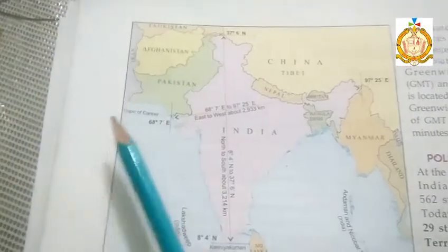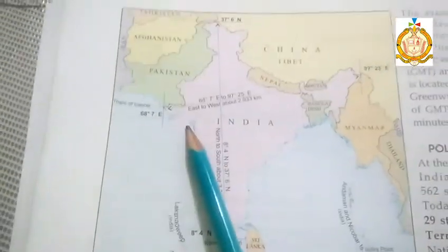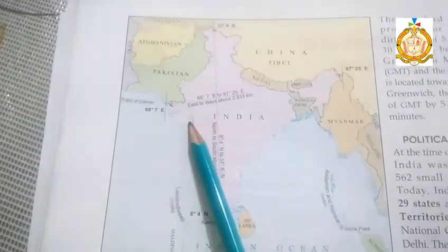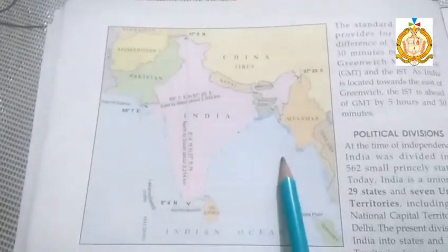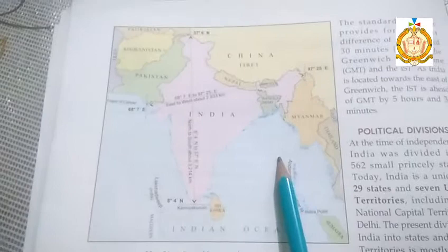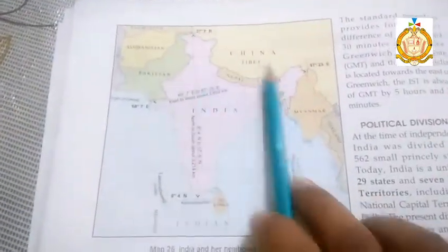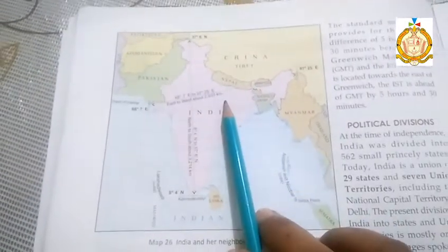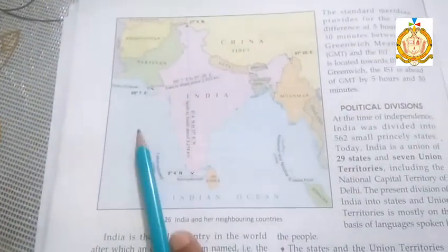Students, see here in the map — this line is called the Tropic of Cancer. This line divides the country into two parts: Northern India and the Deccan and Peninsular India. In the north, it is bounded by the Himalayas. Towards the east is the Bay of Bengal, towards the west is the Arabian Sea, and in the south is the Indian Ocean.